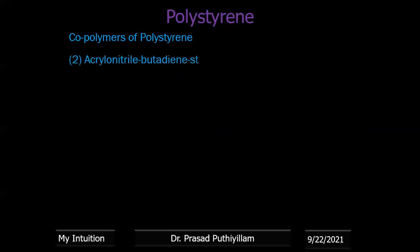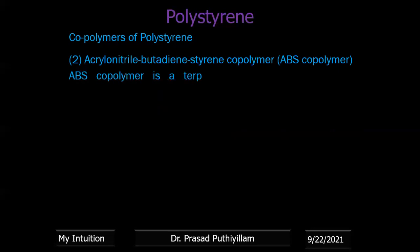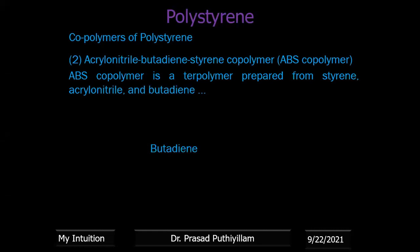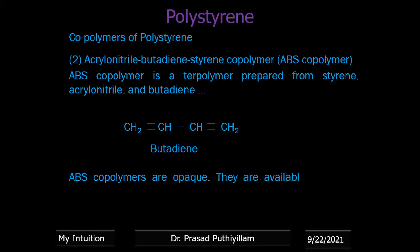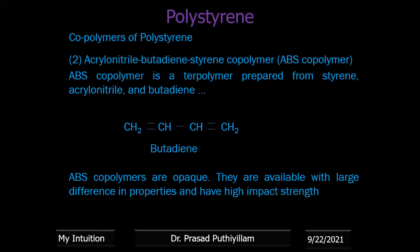The second copolymer is acrylonitrile-butadiene-styrene, known as ABS. It is a terpolymer — it contains three monomer units: styrene, acrylonitrile, and 1,3-butadiene. ABS copolymers are opaque — they do not transmit light. They are available with a large difference in properties and have high impact strength, because three monomers are present and their composition determines the final properties.